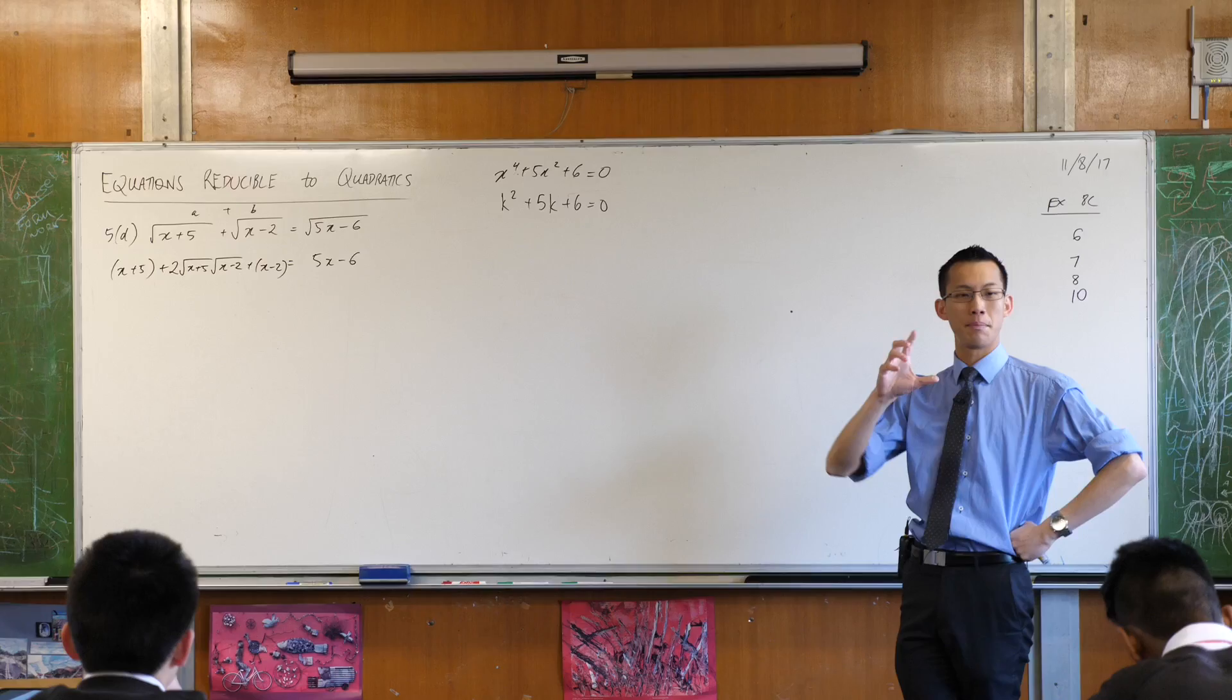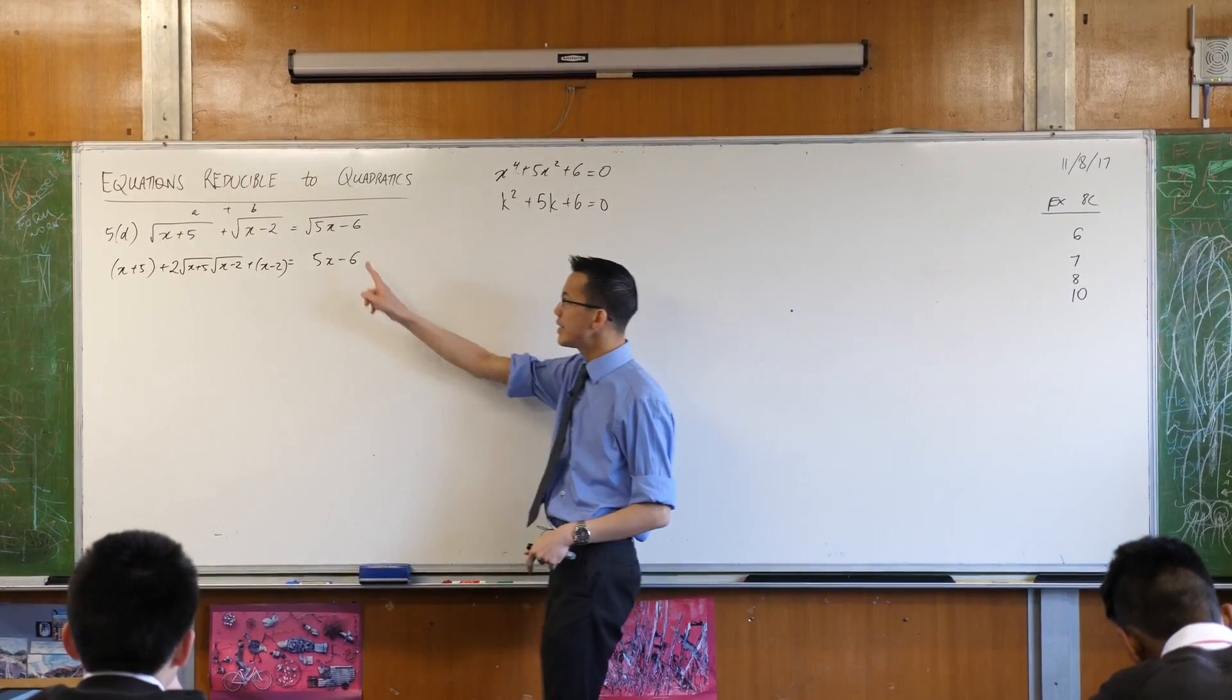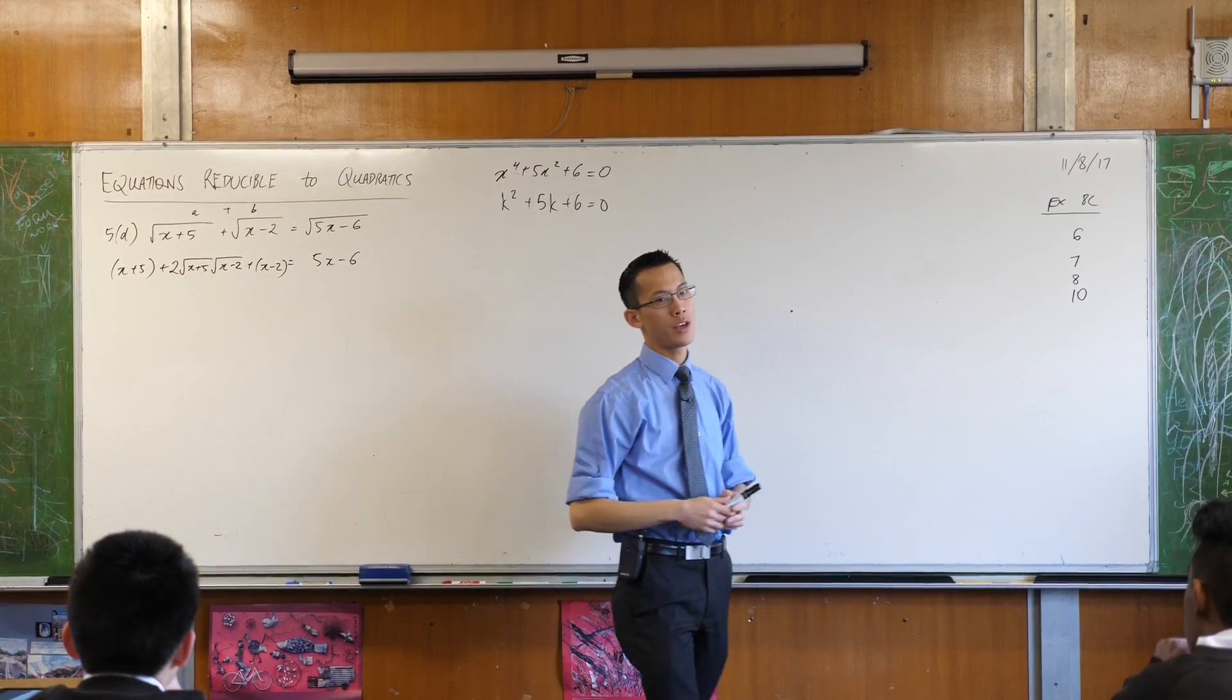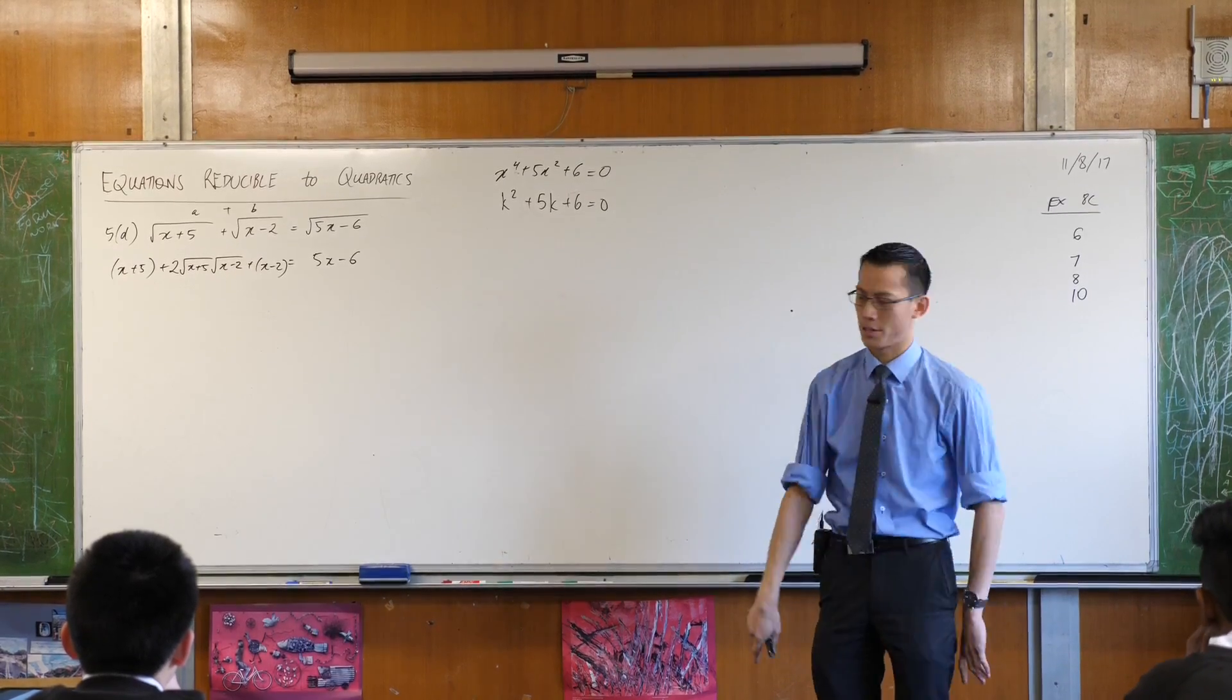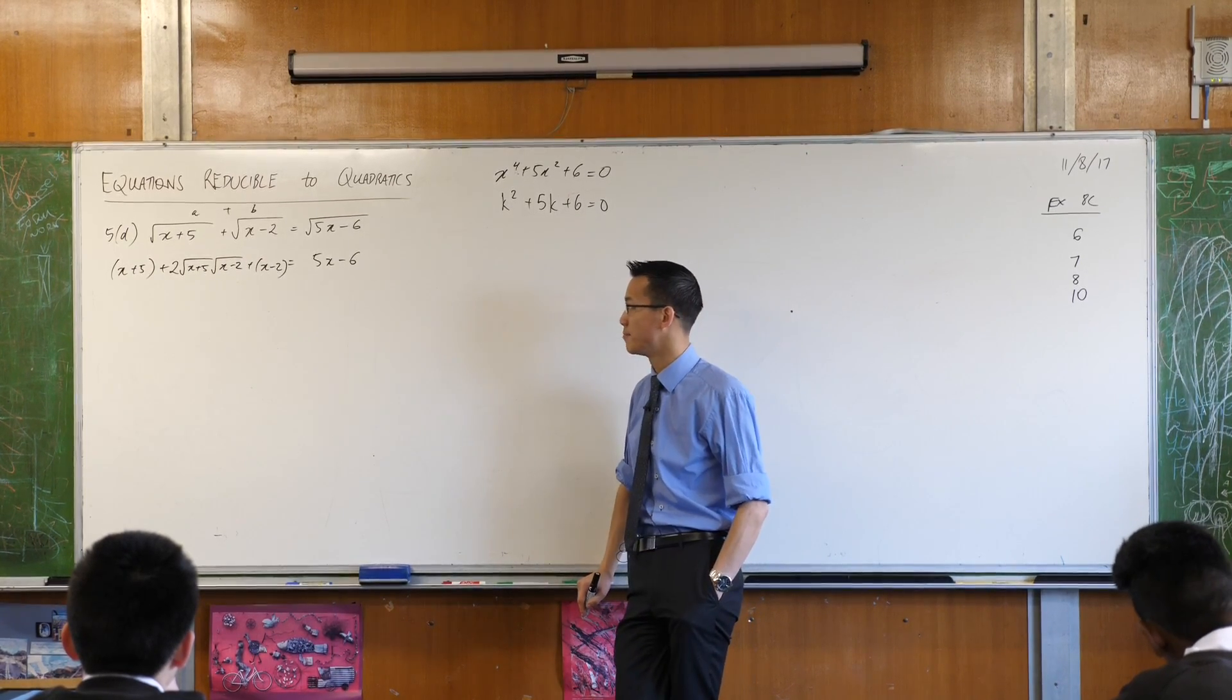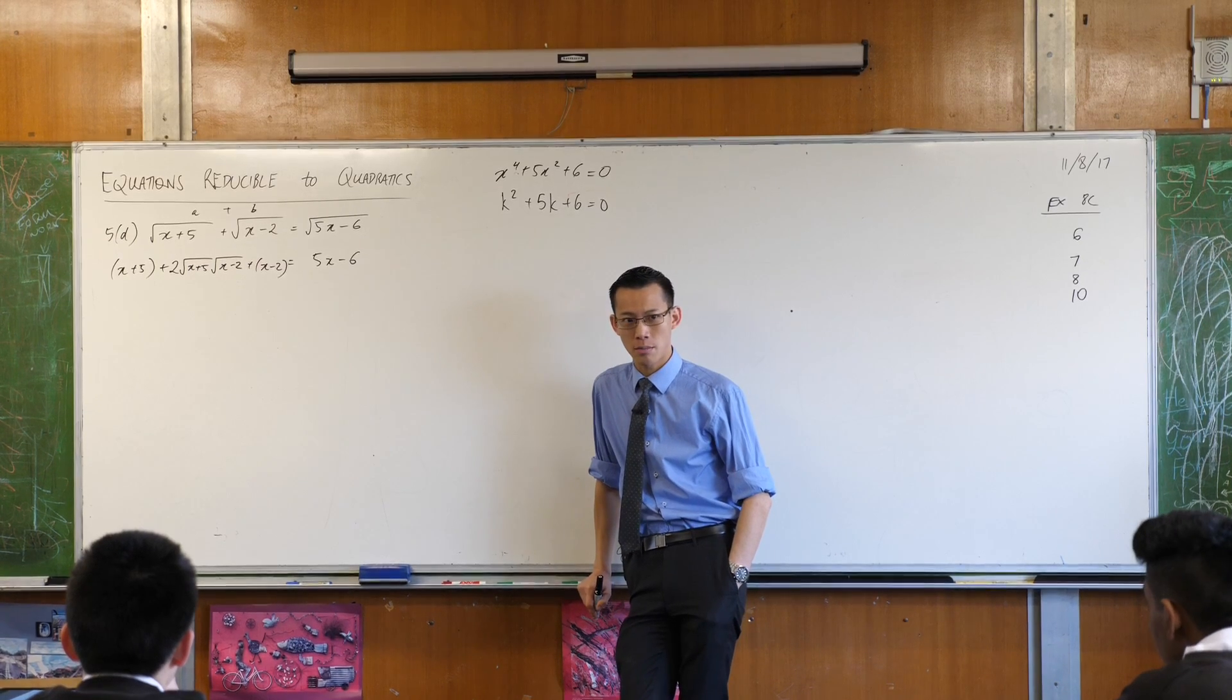Later on, when we have a look at this topic called locus, this is later this term and next term as well, you're going to get equations that look like this, that look disastrous. You get all these square roots popping up because every time you evaluate a distance in coordinate geometry, you get a square root, right? That's from Pythagoras. So this is not just the brainchild of someone who likes to make messy looking questions. This does actually happen. So now what? Was that a bad idea? Should I have done something else?